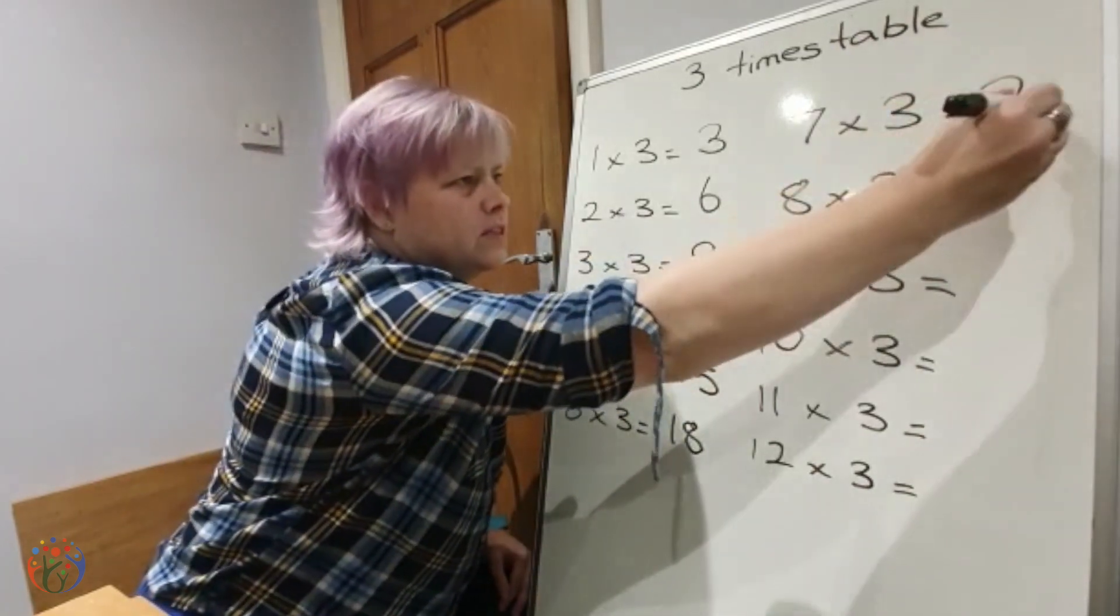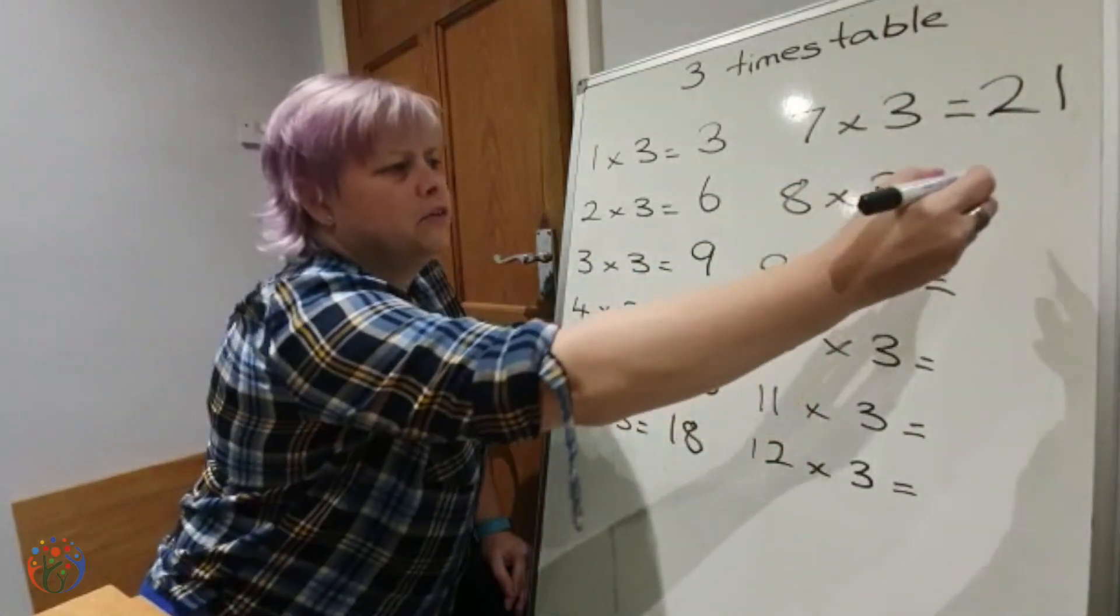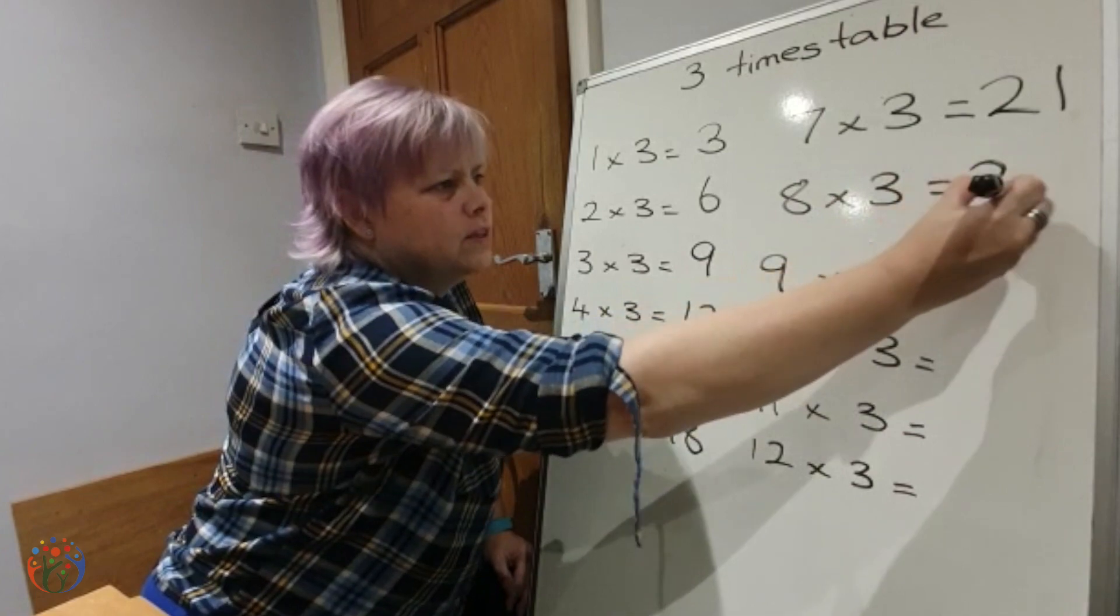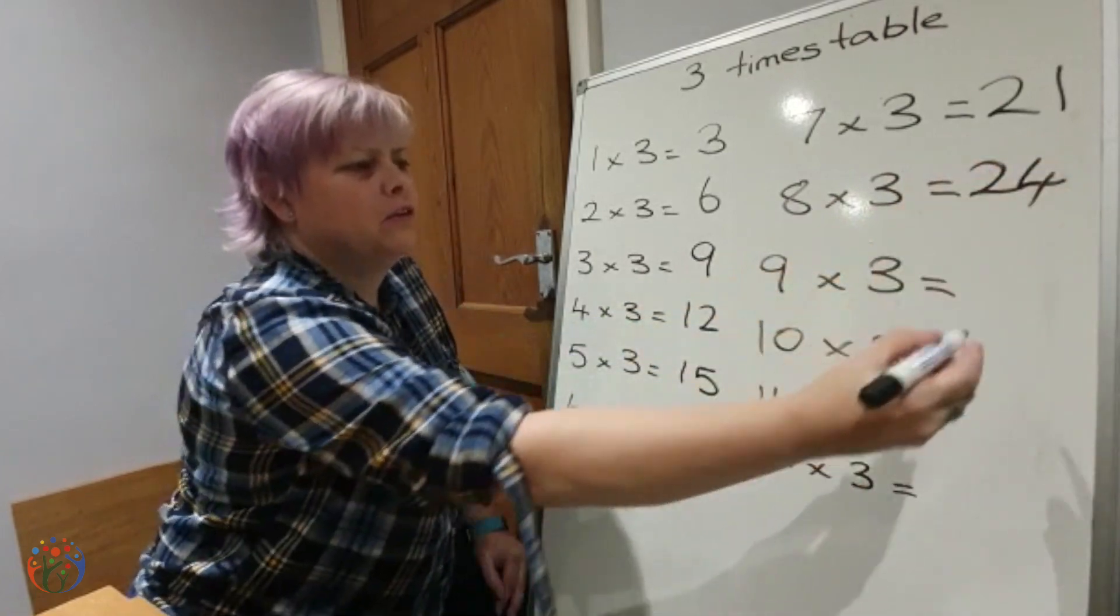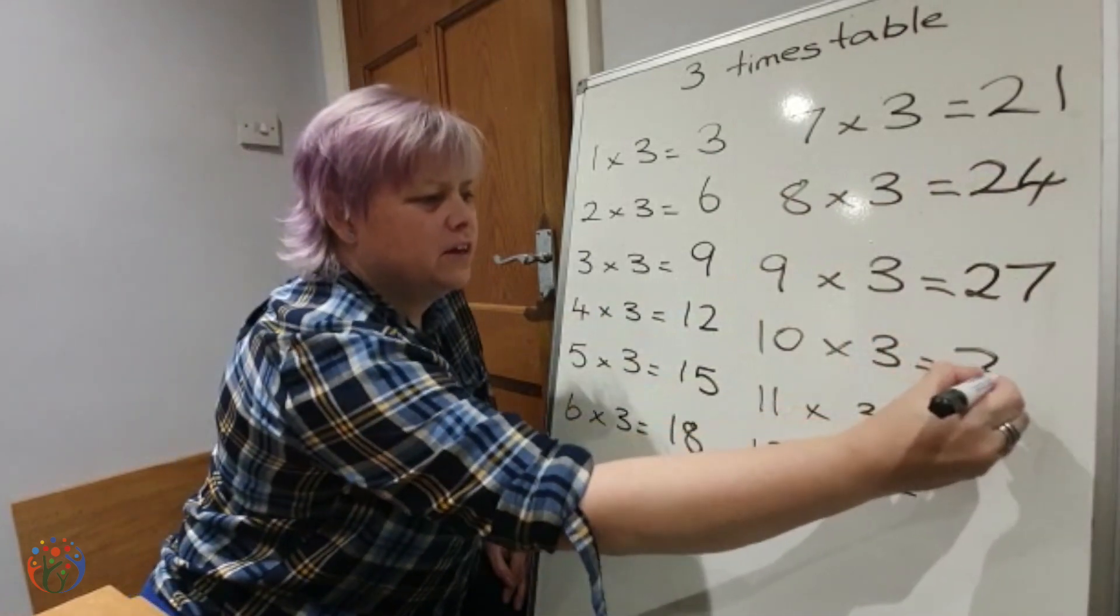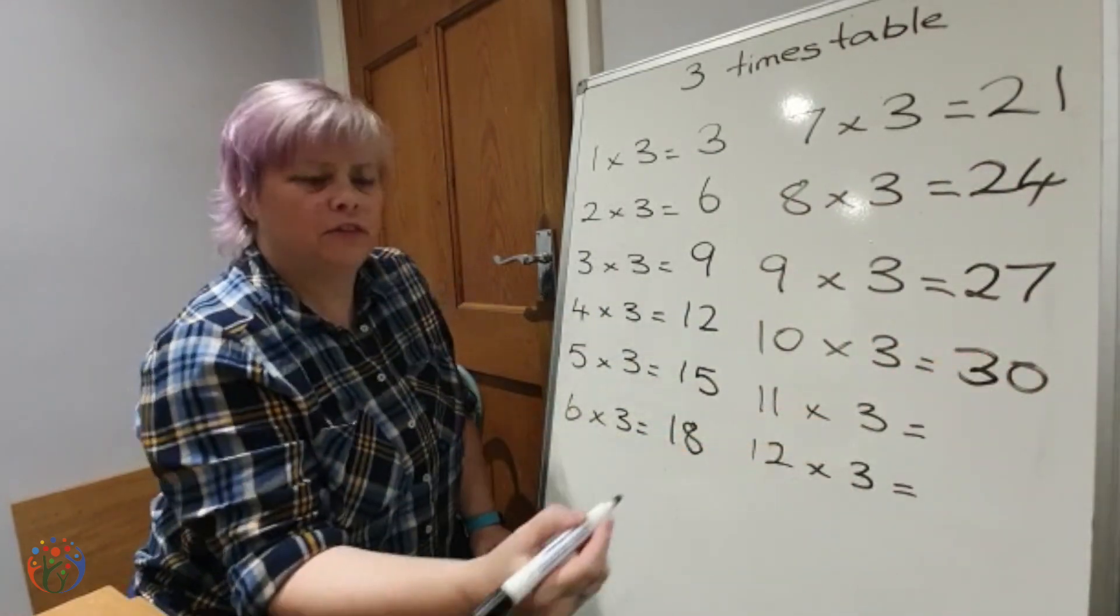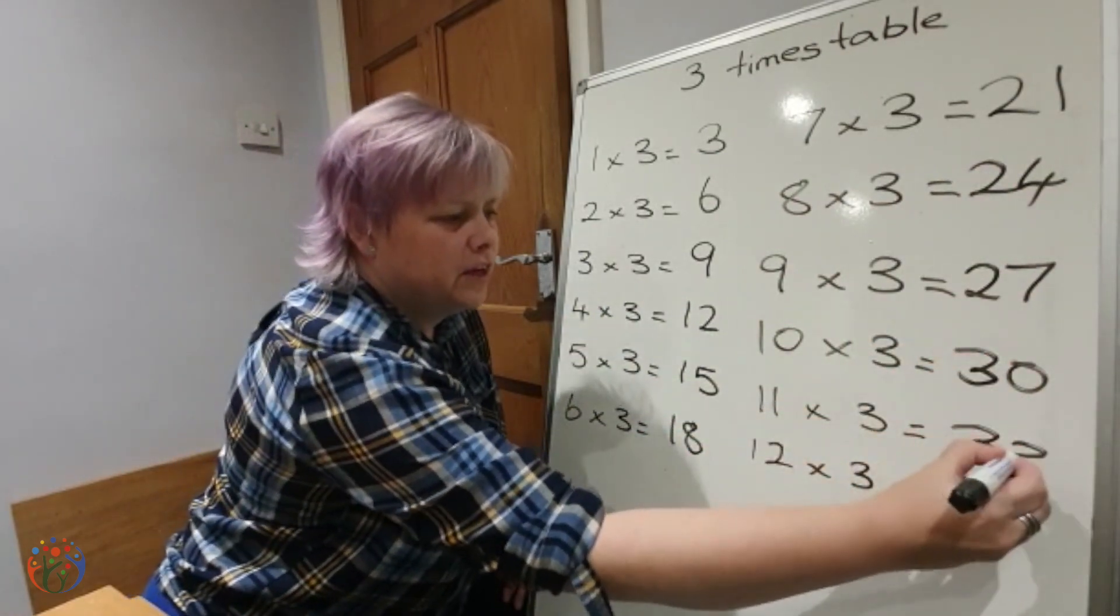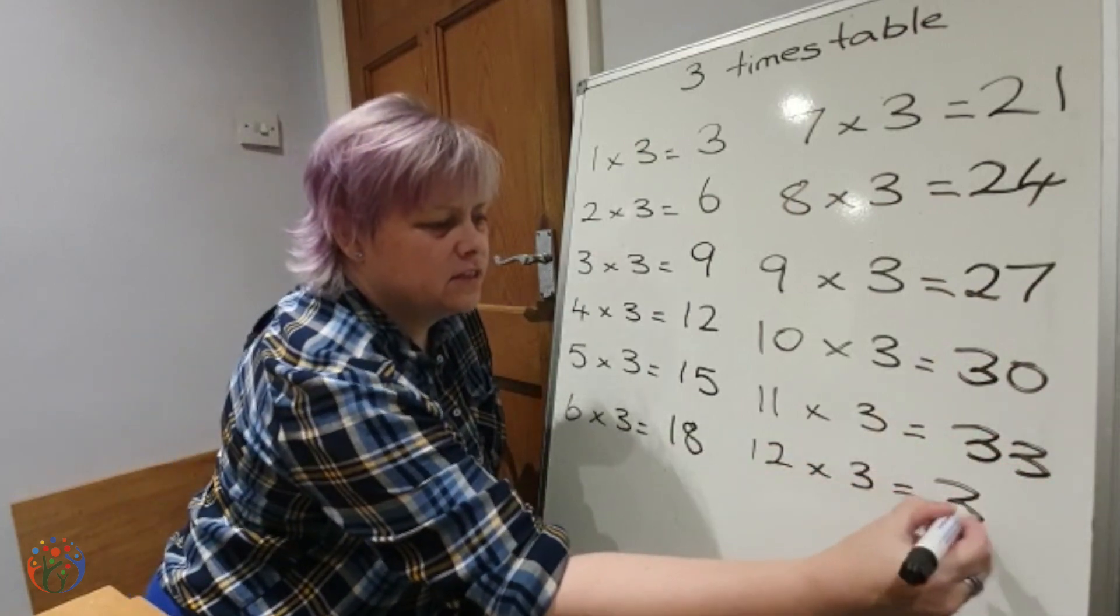7 threes are 21, 8 threes are 24, 9 threes are 27, 10 threes are 30, 11 threes are 33, and 12 threes are 36.